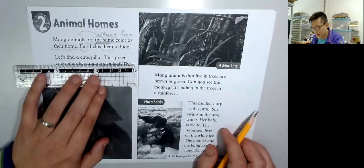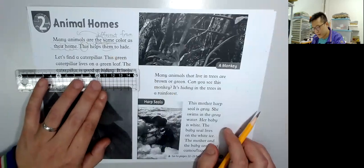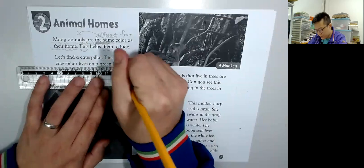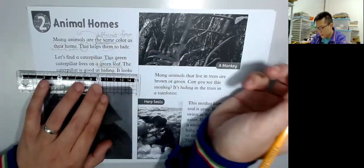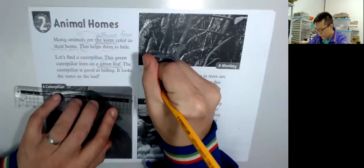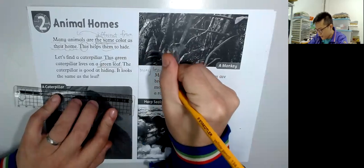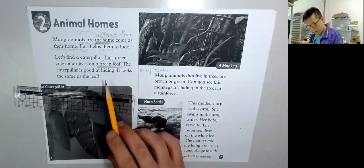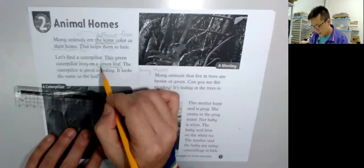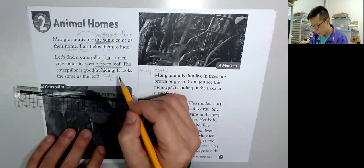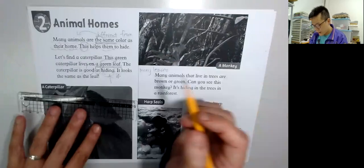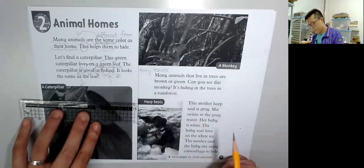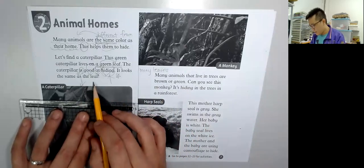Let's find a caterpillar. This green caterpillar lives on a green leaf. One leaf, many leaves. The caterpillar is good at hiding. 'Good at' - be good at doing something. It looks the same as the leaf.